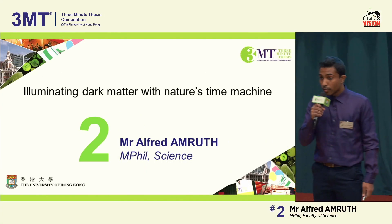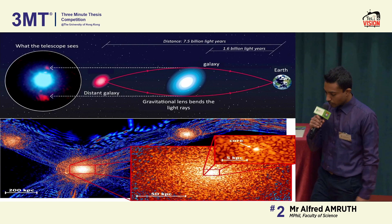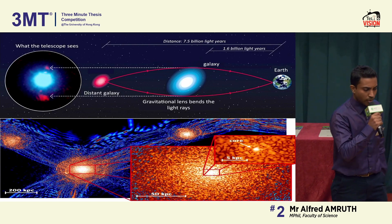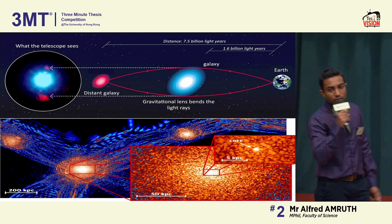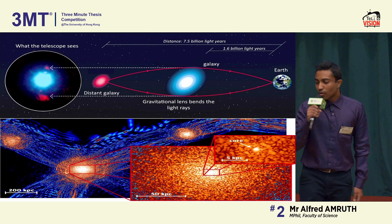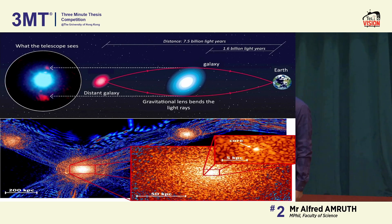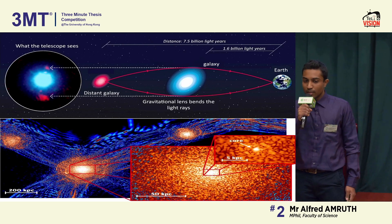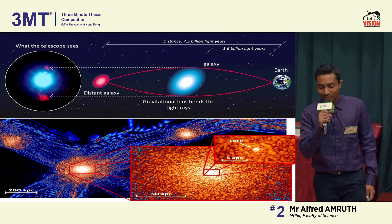Our universe is made of matter and energy. 85% of this matter is dark matter. The reason scientists call it this is not because it signals the end of their academic careers, but because we just can't see it at all.